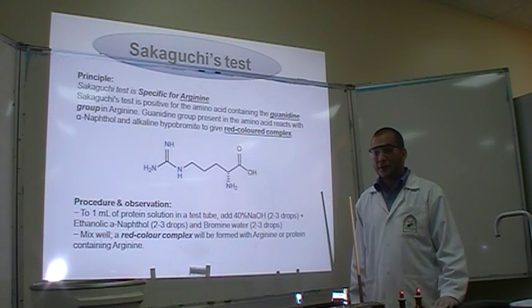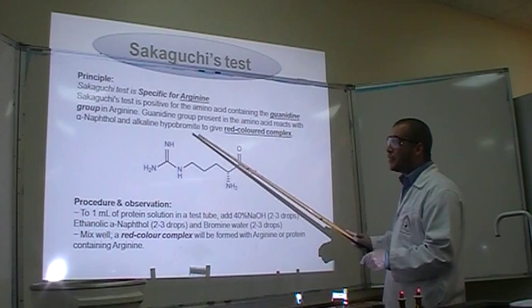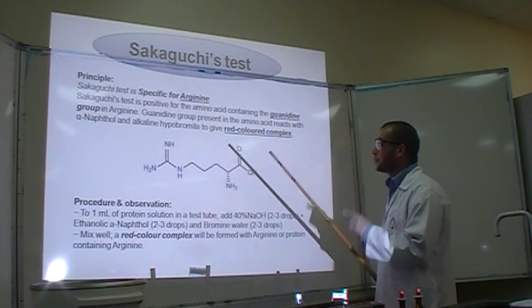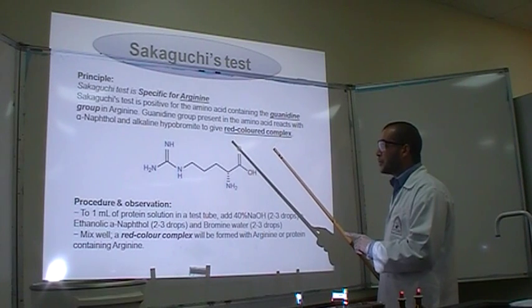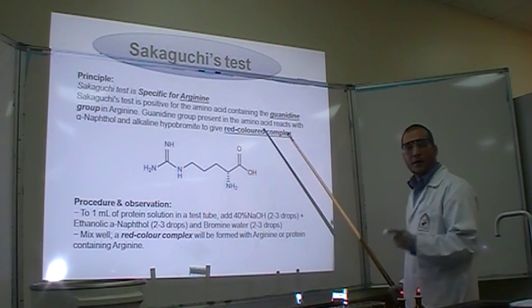The Sakaguchi experiment is specific to Arginine. Why? Because Arginine has the guanidyl group. So, if you add Sakaguchi reagent to Arginine, what are you going to expect to get? You will get a red color complex.